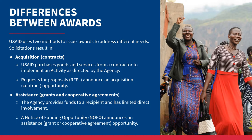USAID's operational policies, also known as the Automated Directive Systems, or ADS, also provide policy and guidelines in Chapter 302 for contracts and Chapter 303 for grants and cooperative agreements. We will refer to these throughout the module to help you find the appropriate chapters and sections.